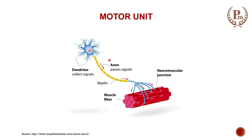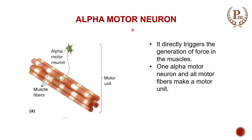A motor unit is defined as a single motor neuron supplying to many muscle fibers. The key word here is 'single' — one motor neuron, but it supplies many muscle fibers. Alpha motor neurons directly trigger the generation of force in the muscles, so one single alpha motor neuron supplying to many muscle fibers forms a motor unit.